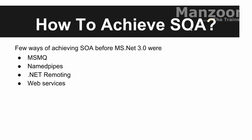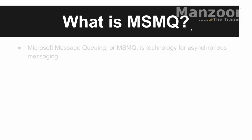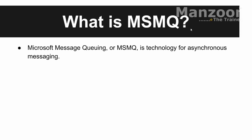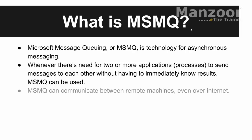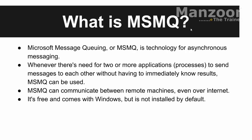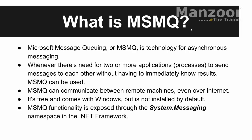That means whatever messages I want, I put them in the queue. The client puts the messages in the queue, and the service, whenever it wakes up, will take them. Microsoft Message Queuing is a technology for asynchronous messaging — whenever there is a need for two or more applications or processes to send messages to each other without having to immediately know the results. MSMQ can communicate between remote machines even over the internet. It is free and comes with Windows, but it is not installed by default. All the functionalities of MSMQ are exposed via the System.Messaging namespace.